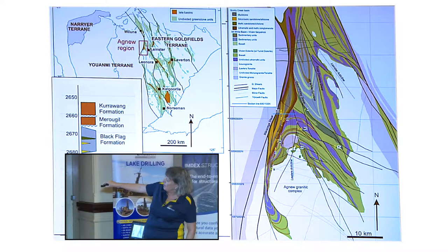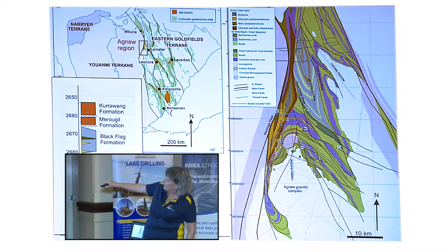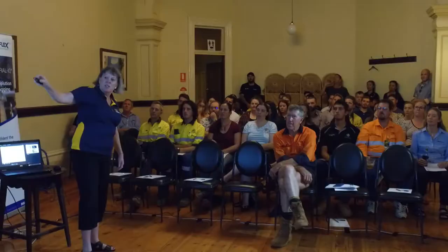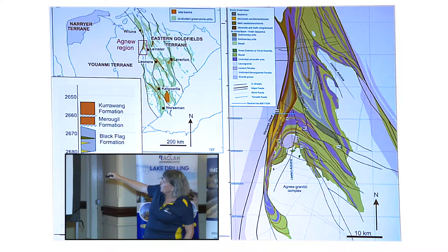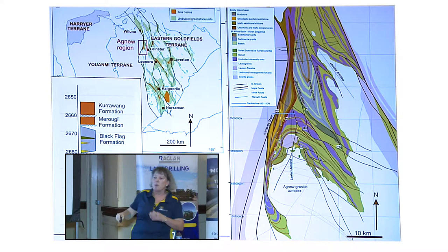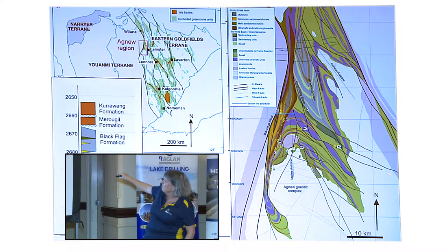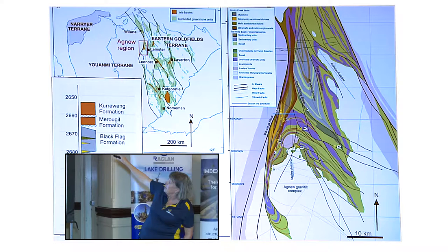The major structures in the area include the Wurrunga shear, which forms the western boundary of the greenstone sequence and loosely links up with the Ida Fault further south. We have the Emu shear that marks the boundary of the Scotty Creek Lake Basin formation, and a number of large D3 shears coming through. We also have the Leinster anticline, the Mount White's syncline, and the Lawler's anticline.